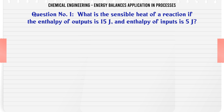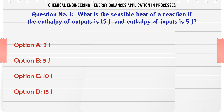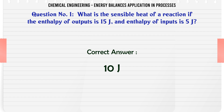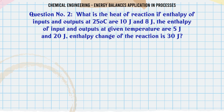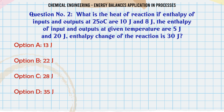What is the sensible heat of a reaction if the enthalpy of outputs is 15 J and enthalpy of inputs is 5 J? A: 3 J. B: 5 J. C: 10 J. D: 15 J. The correct answer is 10 J.